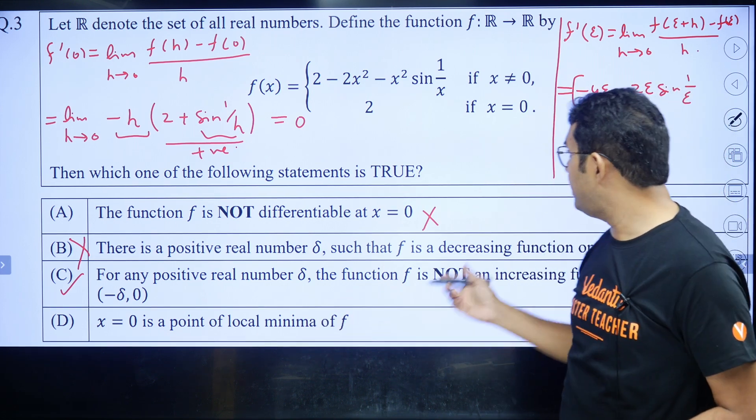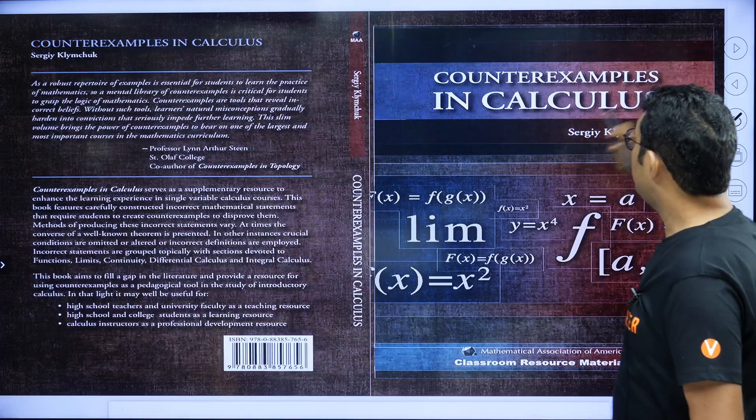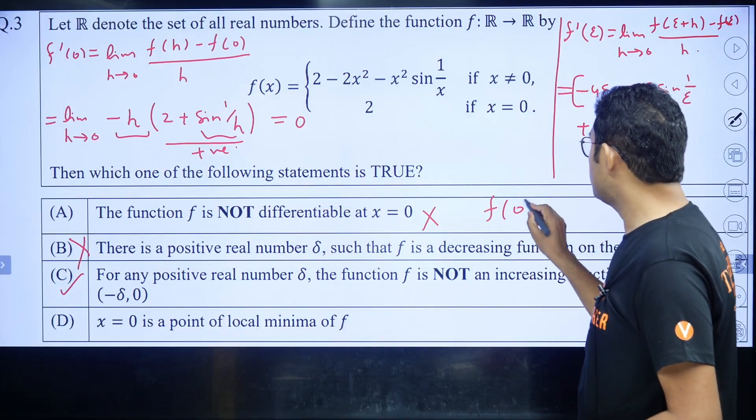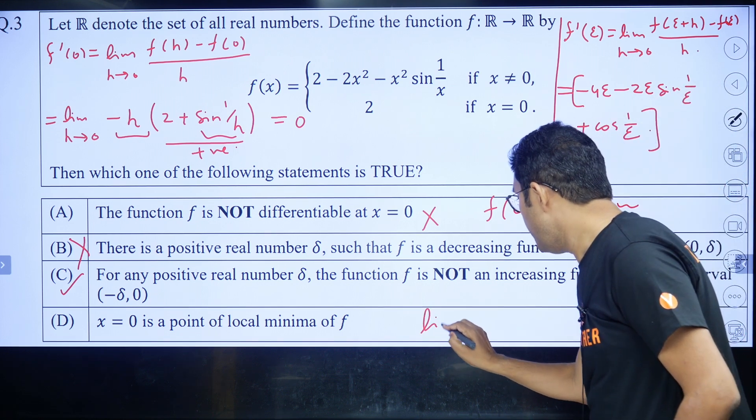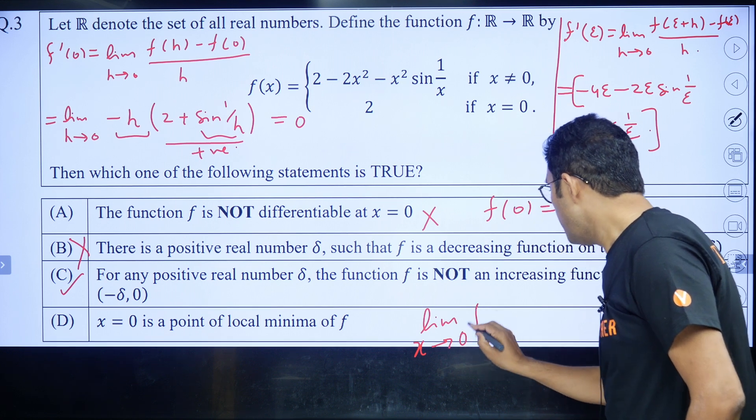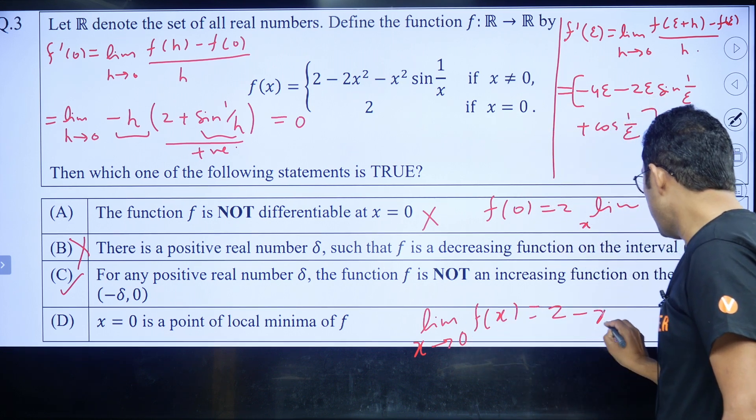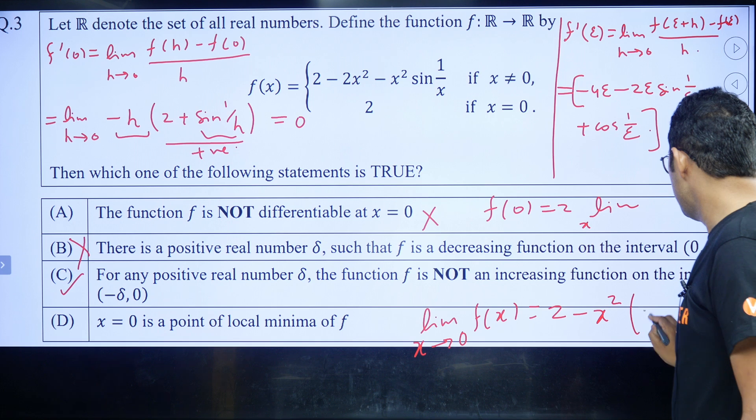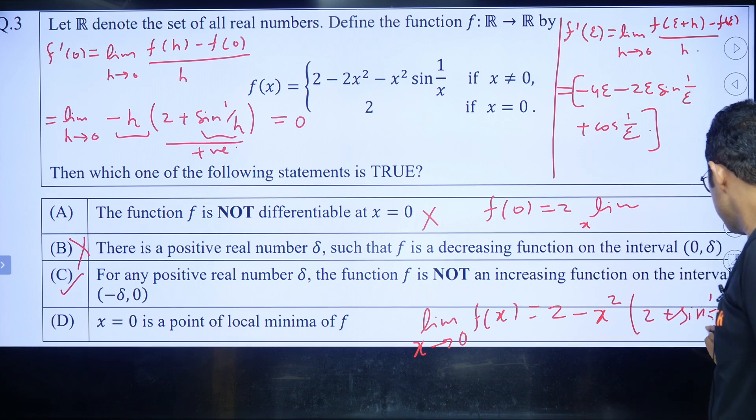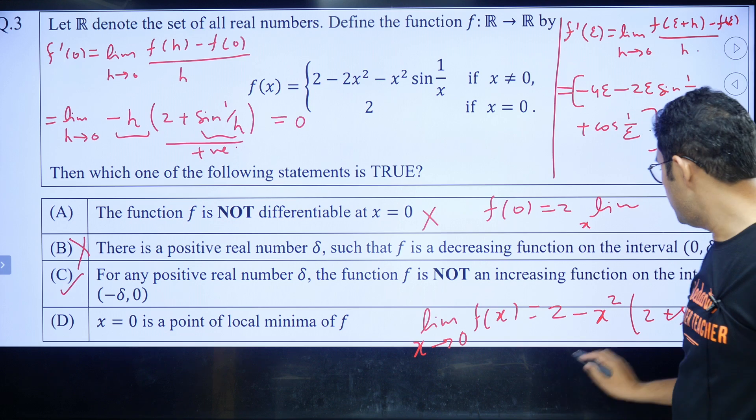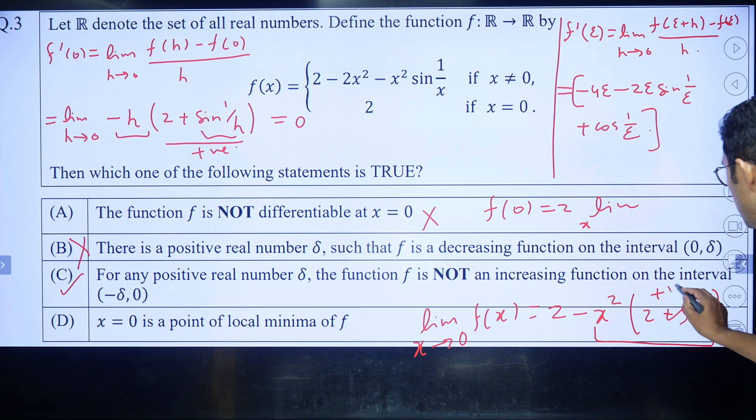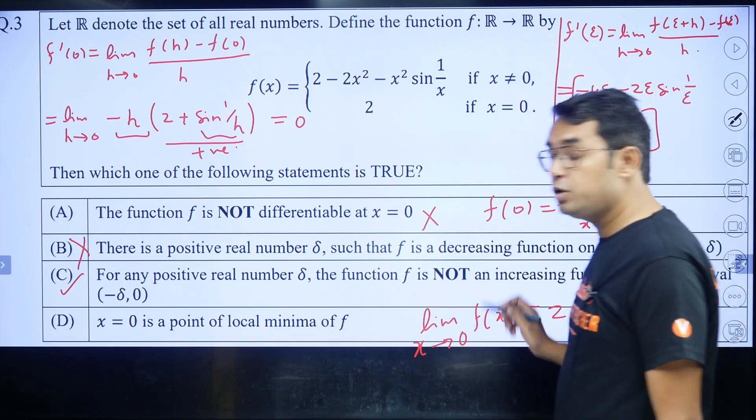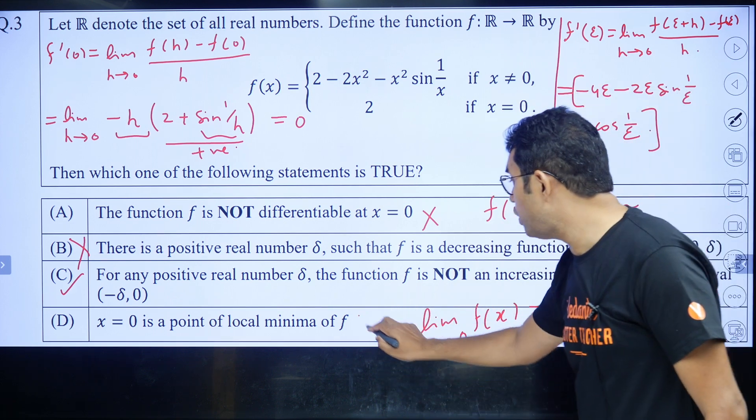And also, this is local minimum. I think you can check it easily that f dash, this f 0 is 2, but limit x approaches to, let me do it here, limit x approaches to 0, f x would be 2 minus x square common and 2 plus 1 by 2 plus sine 1 by x. So you can see for x approaching to 0, this is a positive quantity, because sine 2 plus sine 1 by x is a positive quantity. So this will be less than 2. This will be less than 2. So 2 is a point of minima. 2 is point of maxima, not minima. So that's why this option is also wrong.